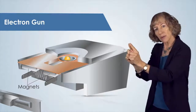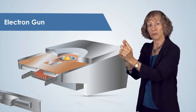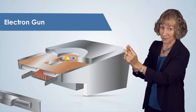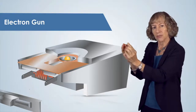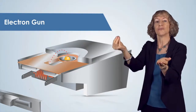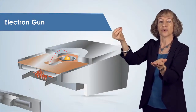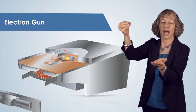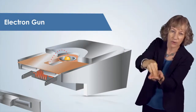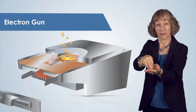The electron beam is generated by heating the metal filament to the point that it glows bright, about 2,500 degrees centigrade. At this temperature, electrons are so energetic that some of them leave the surface of the filament. These electrons are then accelerated toward the source material using a high voltage electrode, and a set of magnets steer and focus the beam onto the source material to be evaporated.